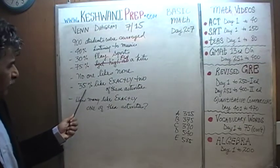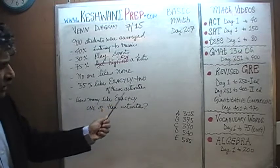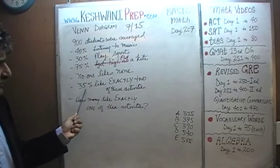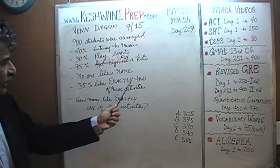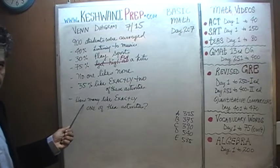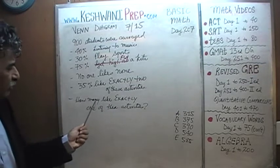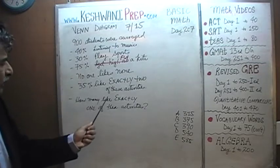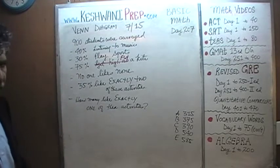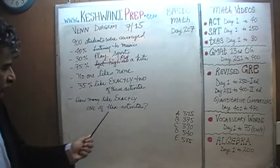35% of the people surveyed said that they like exactly two of these three activities. The question is very simple and straightforward: how many of these students indicated that they like exactly one — not two, not all three — but exactly one activity?